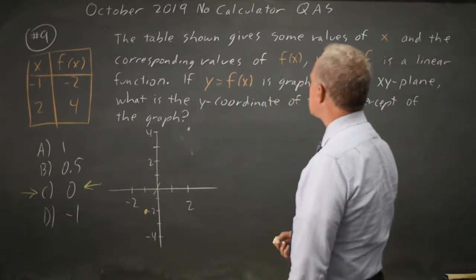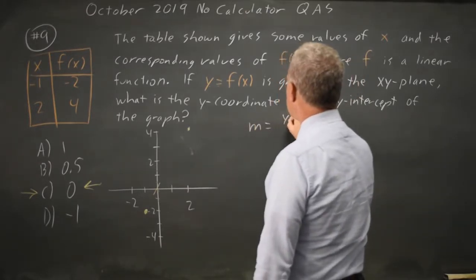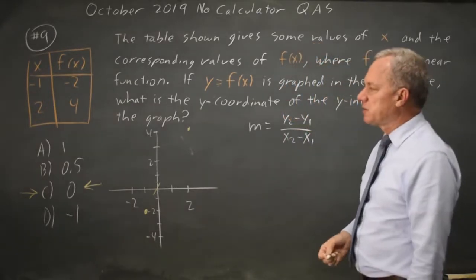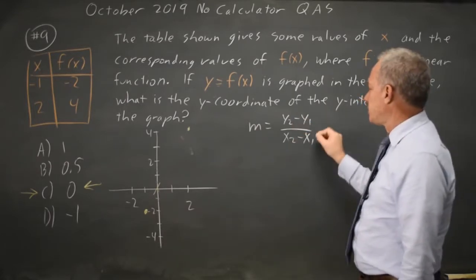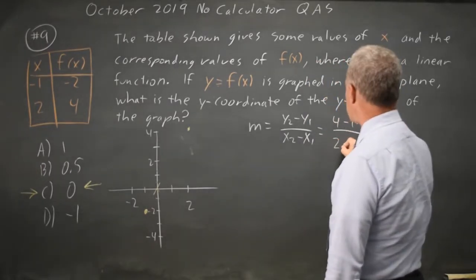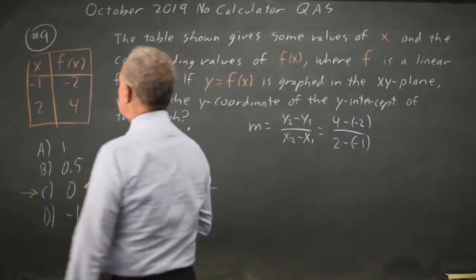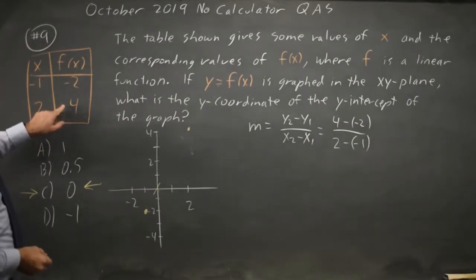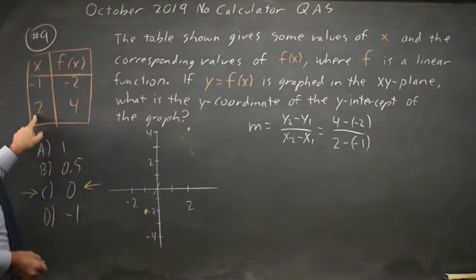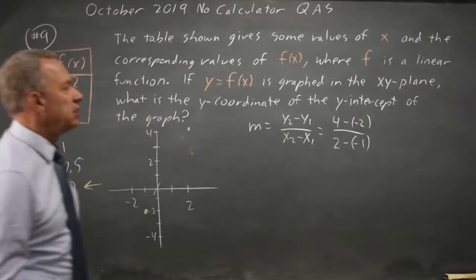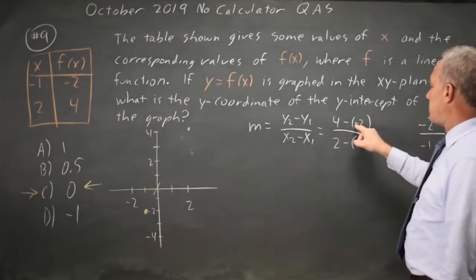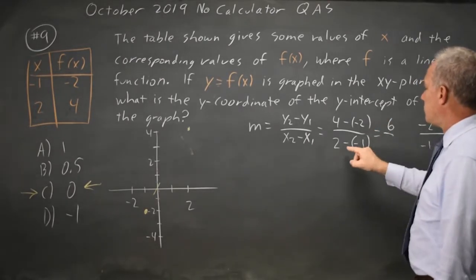Alternatively, we can find the slope: it's y2 minus y1 over x2 minus x1. Make sure you don't flip that — slope is rise over run, change in y over change in x. The y coordinates are 4 minus negative 2, and x coordinates in the same order, 2 minus negative 1. It doesn't matter which point you choose as x2, y2 and which as x1, y1, as long as you keep them in the same order. This gives us 4 minus negative 2, which is 4 plus 2, equals 6, over 2 minus negative 1, which is 2 plus 1, equals 3.